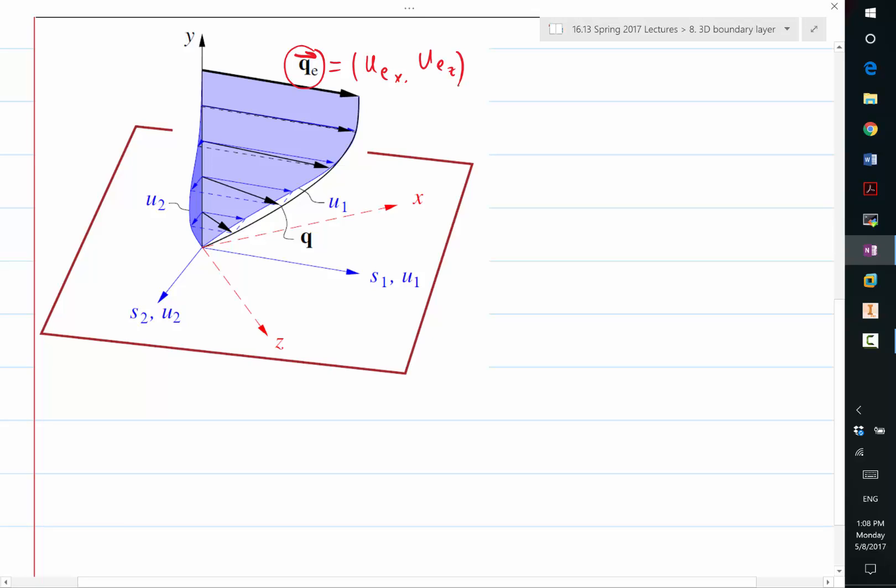So this QE is basically the component of the velocity tangential to the surface. And this QE serves the same purpose as our UE in our two-dimensional analysis.